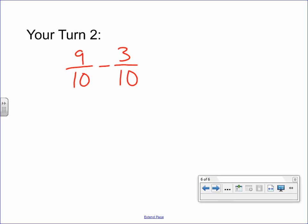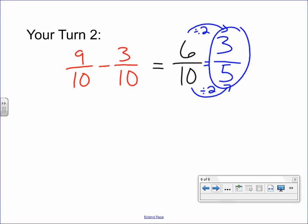All right, let's see how you did here. If you did the subtraction, 9 minus 3 is 6. We leave the denominator the same as 10. Looking at those two numbers, hopefully you saw then that 6 and 10 are both even, so we know we can divide by 2. So, 6 divided by 2 is 3, and 10 divided by 2 is 5. So, the answer then is 3 fifths.